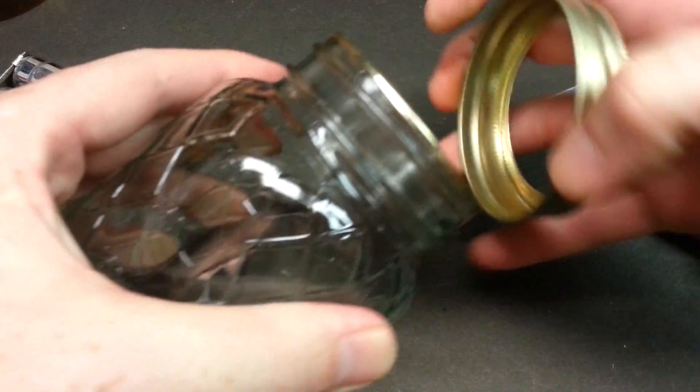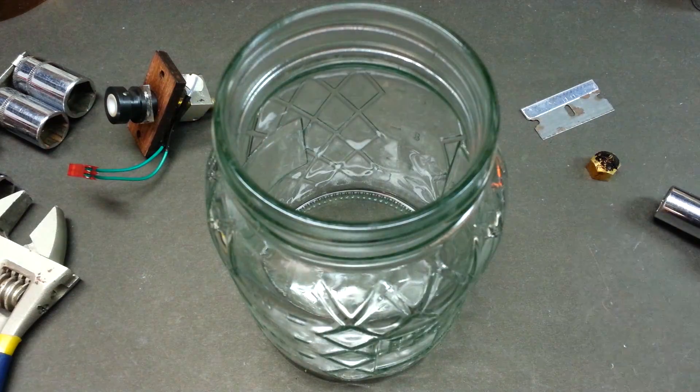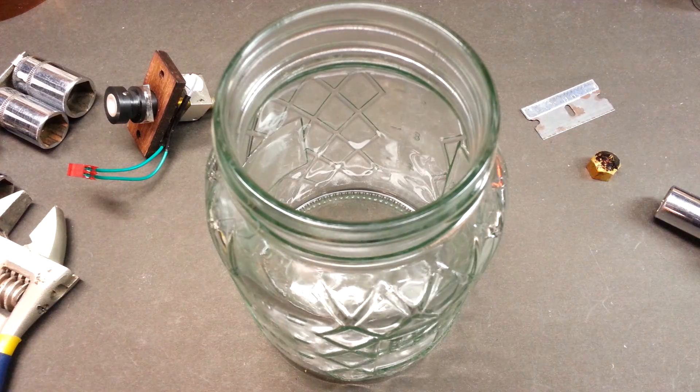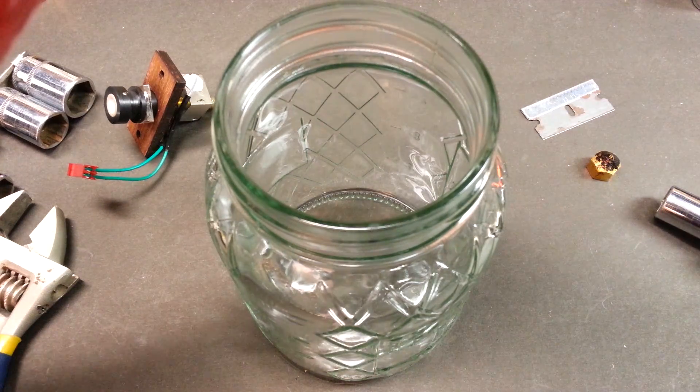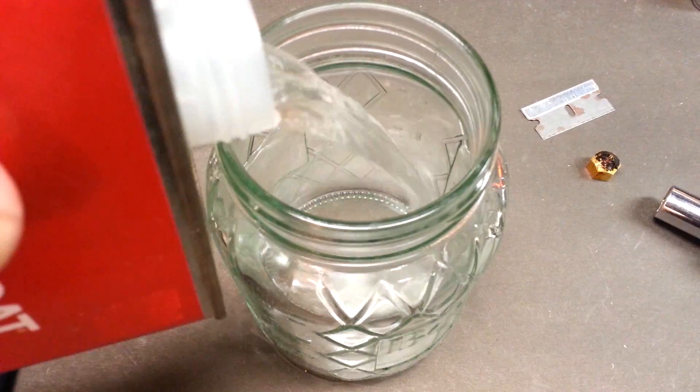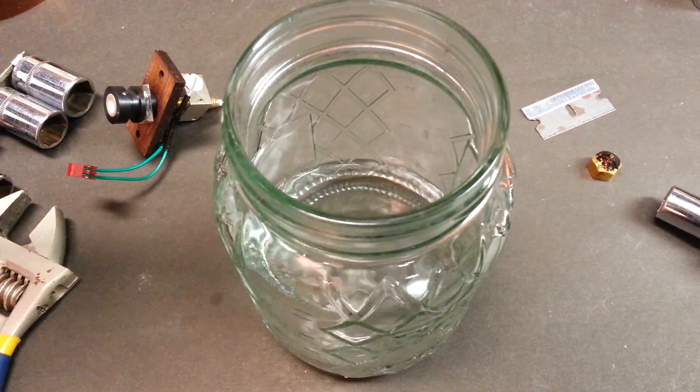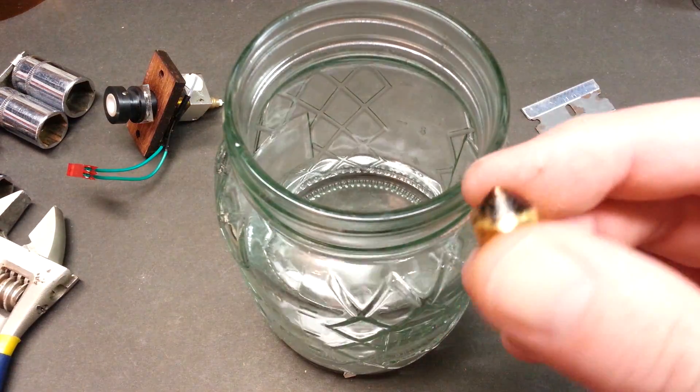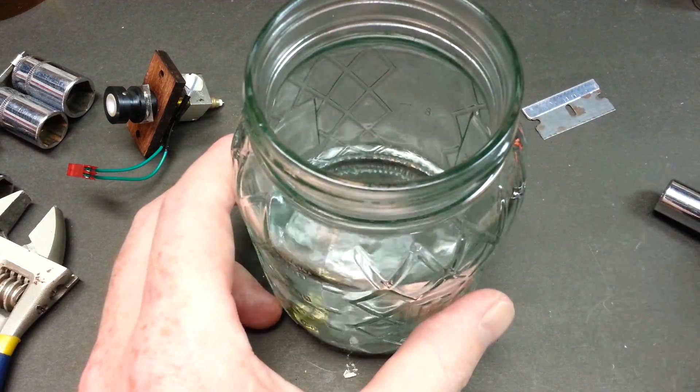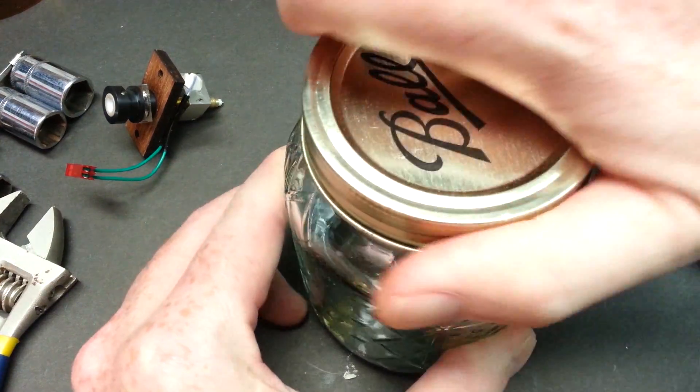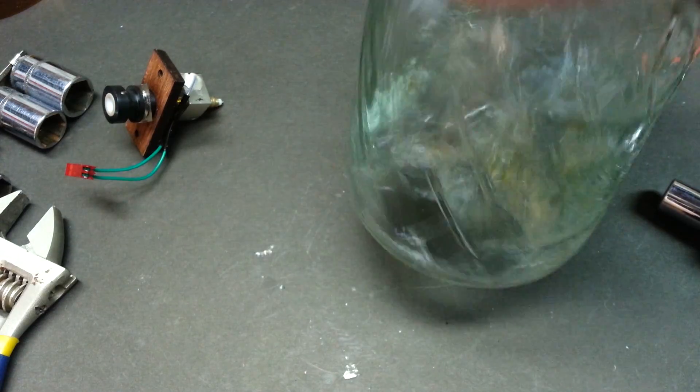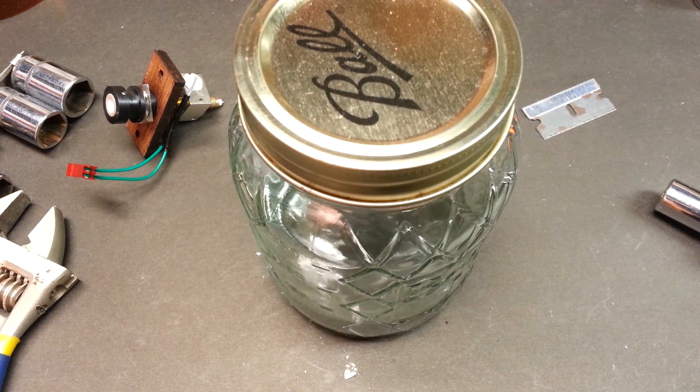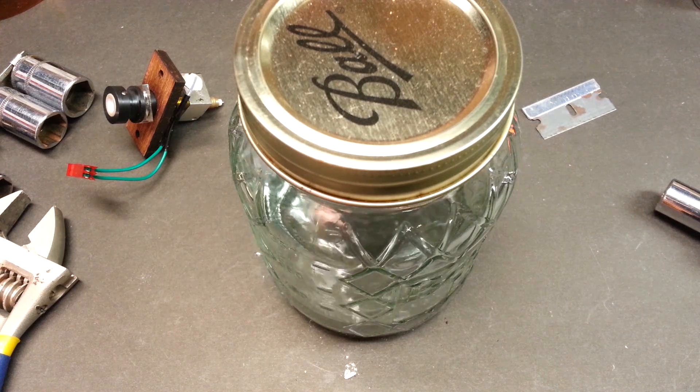So we'll take our jar and pour some acetone in here. Guys, be careful with this stuff. It is highly flammable. That's plenty. Seeing as how today we're only going to be worried about the nozzle, throw the nozzle in, seal the jar, and we're going to set that aside. I'll resume this video when we're all set and cleaned out and once that has some chance to work on that.